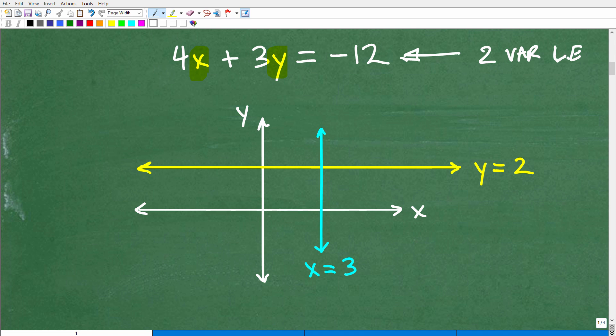So we would call this a two-variable linear equation. These aren't the only type of linear equations that you learn how to graph. We have more basic ones. We have x equals a number and y equals a number. This is a one-variable linear equation.